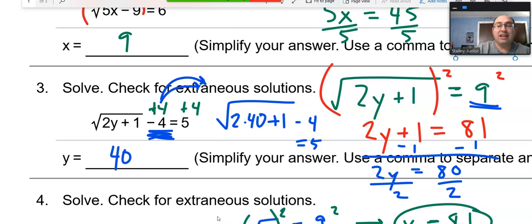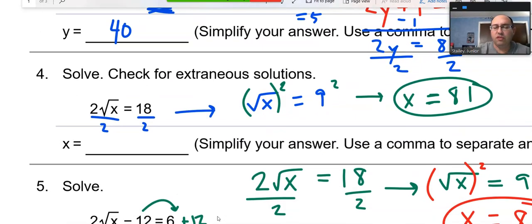So it does work out. If you would get something that would not create 5, then it would be called an extraneous solution, an extra solution, and we would have to throw it out. In this case, there is no extraneous solution. So moving on to question 4.